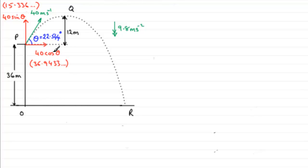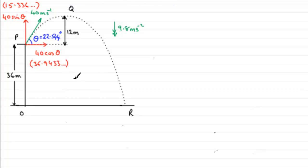You might like to pause the video and have a go at this. The method is: consider the horizontal motion, then consider the vertical motion to find the time from O to R, and use that time in the horizontal equation to find the distance OR.